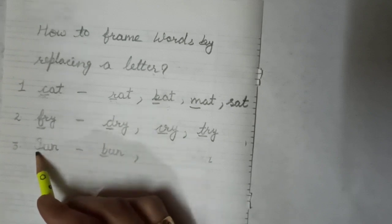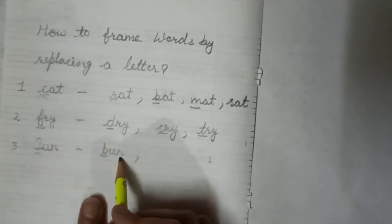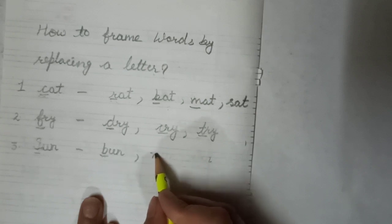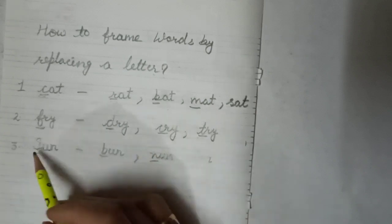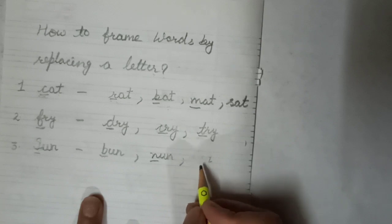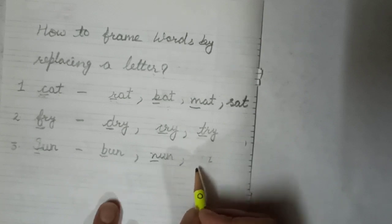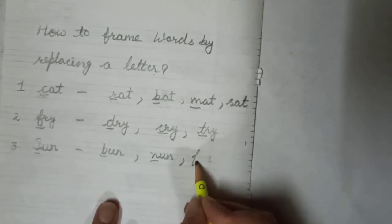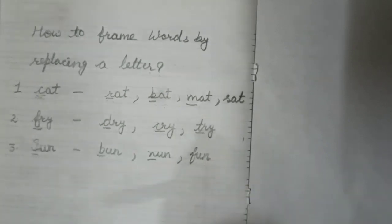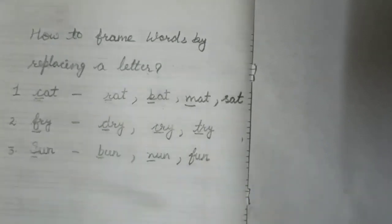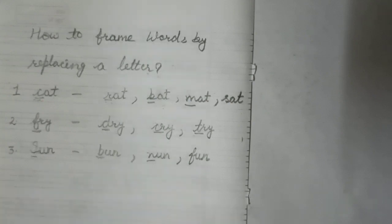Next word is sun — S, U, N. When I replace S with B it will be bun. When I replace S with N it can be nun. Then replace S with F to get fun. Like this you can frame new words by replacing any letter of the given word.